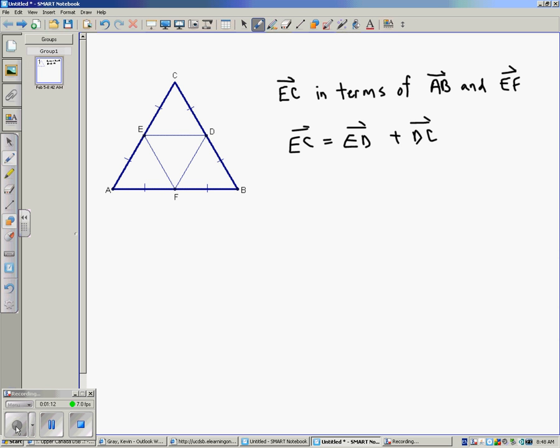Now, I want you to notice that that vector EC is expressed in a relationship where it's ED. So it starts at E, goes to an intermediate point D, and then the second vector picks up at D and ends at C, and that's your end point from the original vector EC. Now, if we proceed with the next line,